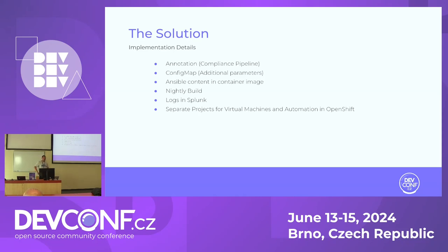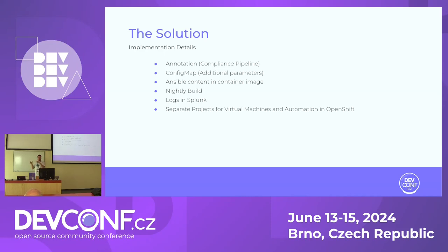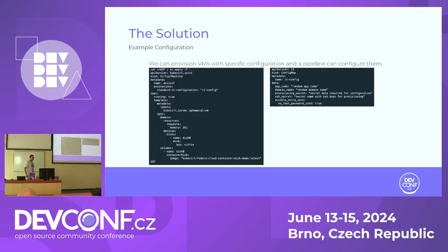Pipeline run logs are forwarded to Splunk for auditability. The solution is also flexible regarding project layout: some teams deploy VMs in one OpenShift project and run pipelines in another centralized project. Whether you have one project or multiple projects for VMs and a single pipeline project, the solution supports it — useful for teams managing hundreds of VMs who need more than labels to organize things.